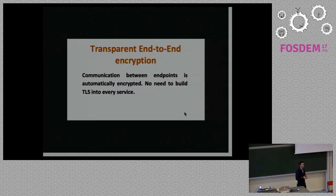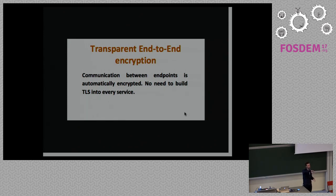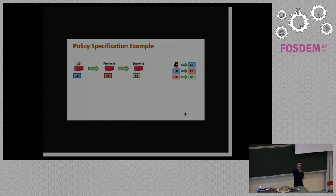We can do transparent end-to-end encryption, meaning if you have applications without TLS implemented, we can do the end-to-end encryption for you. Anybody between the sender and receiver will only see encrypted packets. The packet goes unencrypted only from your task into Cilium, gets encrypted there, and is decrypted transparently on the other side. This is showing a policy example with a simple application: load balancer, front-end, back-end. We attach a label to each and allow the user talking to the load balancer, load balancer to front-end, front-end to back-end. Each of these gets an identity and the policy is enforced.